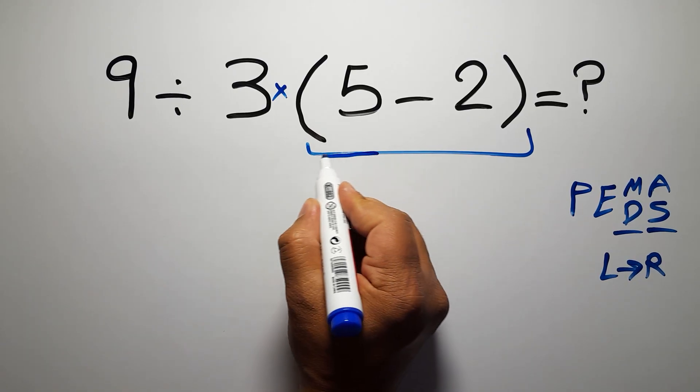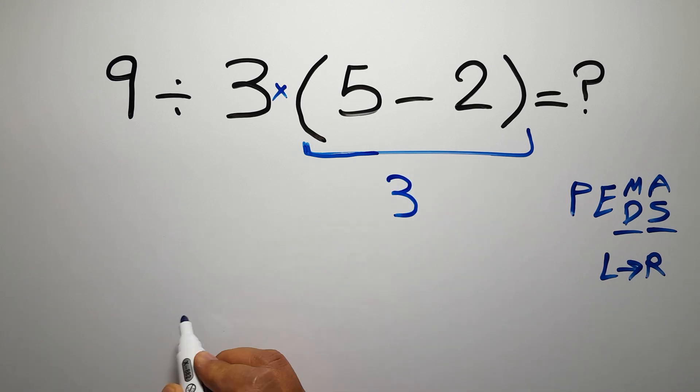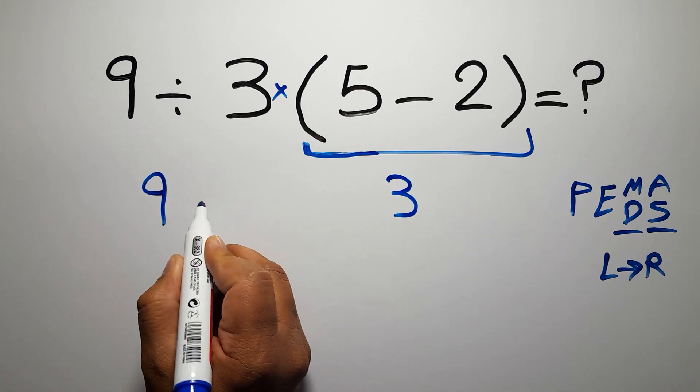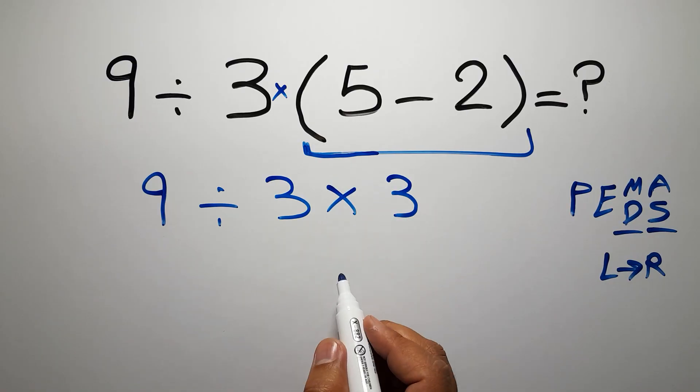Inside this parentheses we have 5 minus 2, which equals 3. So 9 divided by 3 times 3.